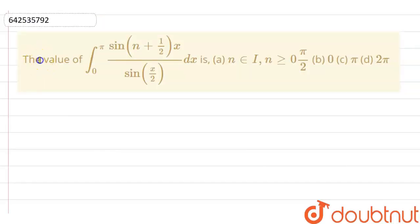Hello everyone, in this question we need to find the value of integration 0 to pi sin n plus 1 by 2 x divided by sin x by 2 dx. Let us suppose this is my I_n, which is 0 to pi sin n plus 1 by 2 x by sin x by 2 dx.